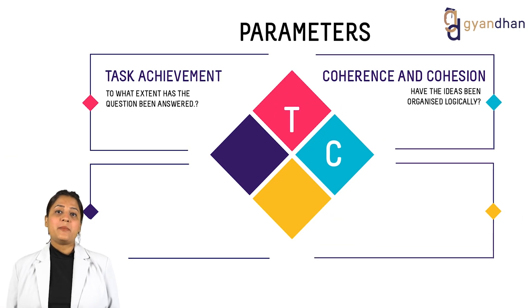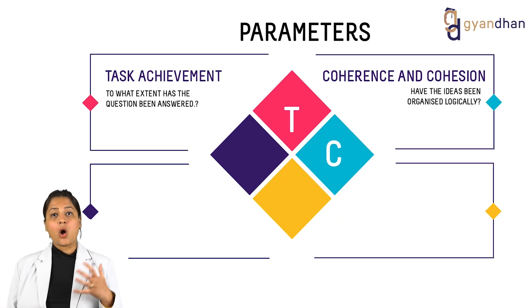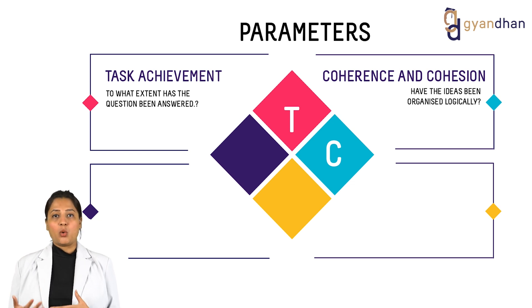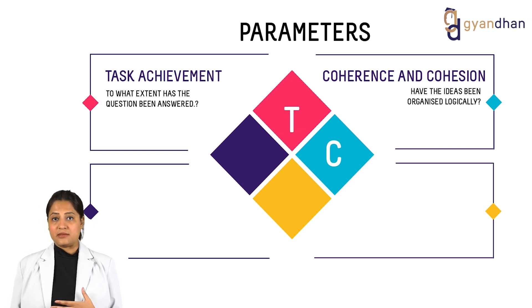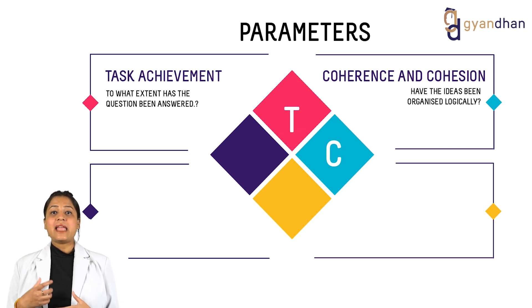The next parameter checks if paragraphing has been done well, if there is a logical organisation of the ideas, and if it's easy to follow what has been written. In other words, this criteria checks if the reader can understand the text well.